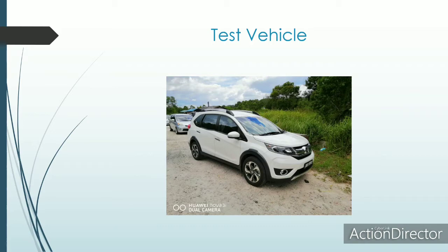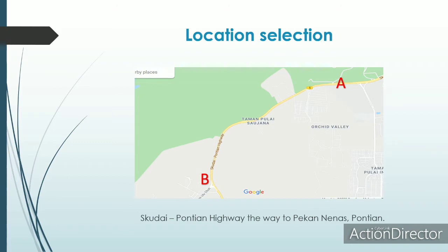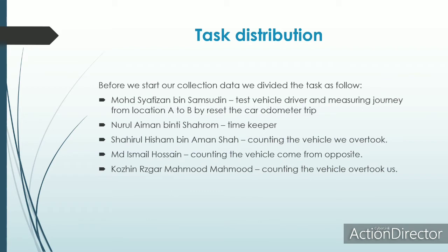This is our test vehicle. We decided on the location for our assignment at the Skudai-Pontian Highway, towards Pekan Nanas Pontian. Our first point is Point A and the second point is Point B, approximately 3.9 kilometers apart. We distributed tasks among five members: Shafizan as driver and measuring distance using the car odometer; Noor Aiman as timekeeper; Shafizan counting vehicles we overtake; Mat Ismail counting vehicles from the opposite direction; and Khozin Hizgal counting vehicles that overtake us.